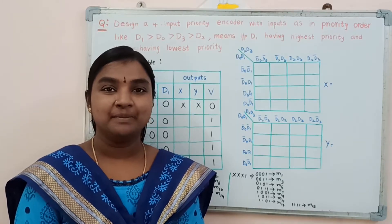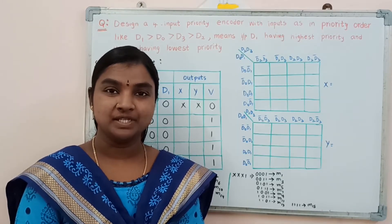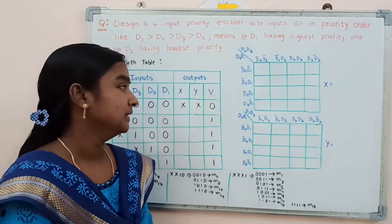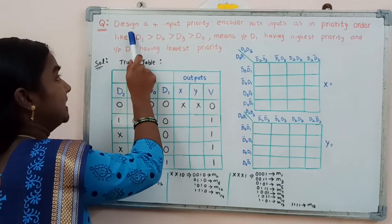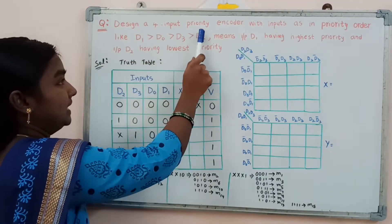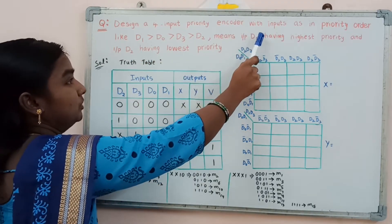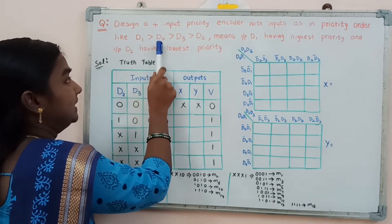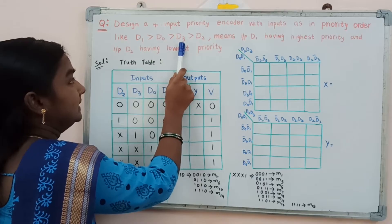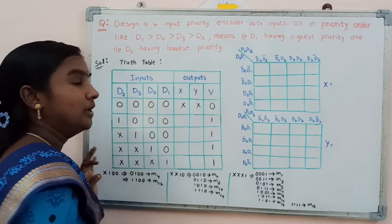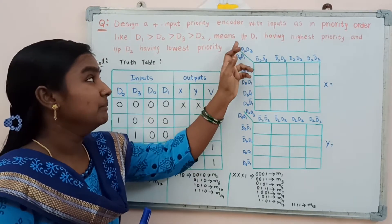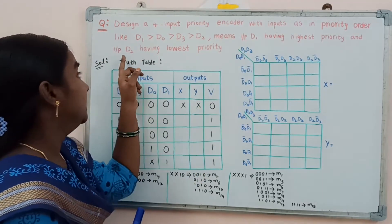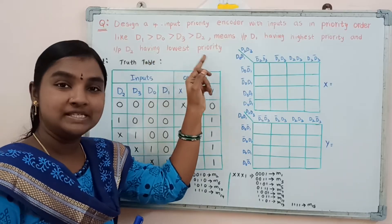In this video, I am going to explain a question on priority encoder circuit. The question given is: design a 4-input priority encoder with inputs in priority order d1 greater than d0 greater than d3 greater than d2, meaning input d1 has the highest priority and input d2 has the lowest priority.